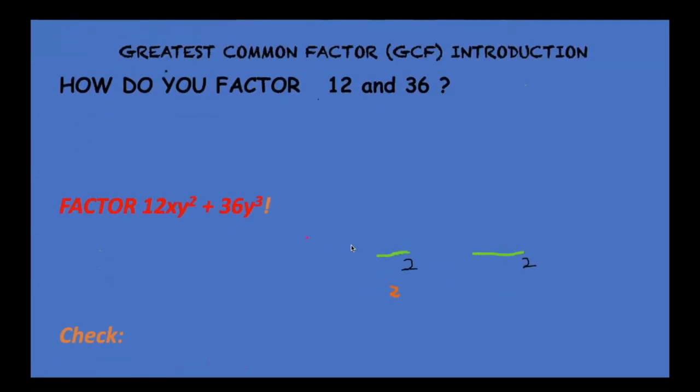12 and 36. You'll get the idea here. These are going to get a little more complex. But 1 and 12, 2 and 6, 3 and 4. 36 is 1 times 36, 2 times 18, 3 times 12. Some of these you may not be as familiar with. 4 times 9, 6 times 6. The greatest common factor in those lists is 12.